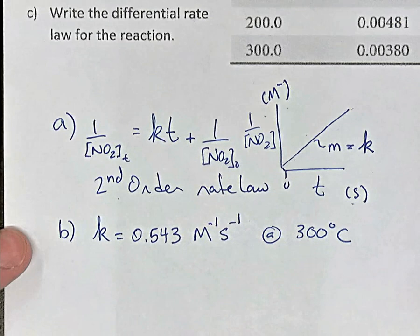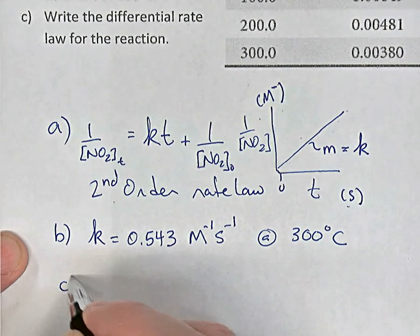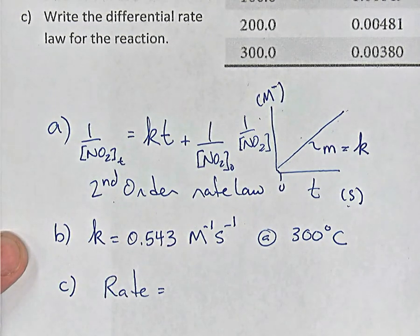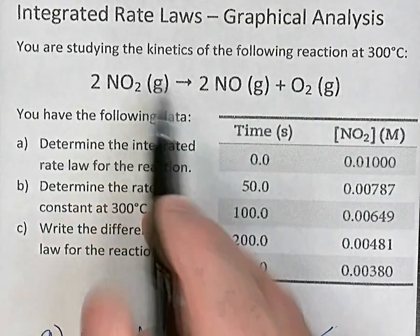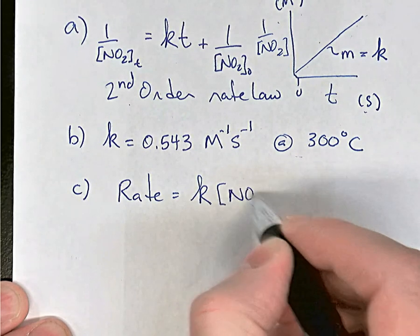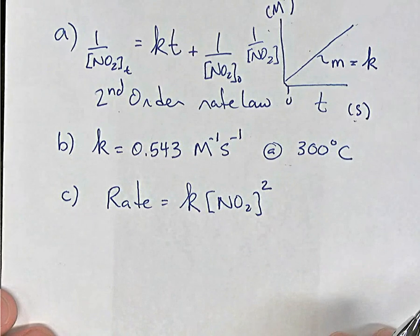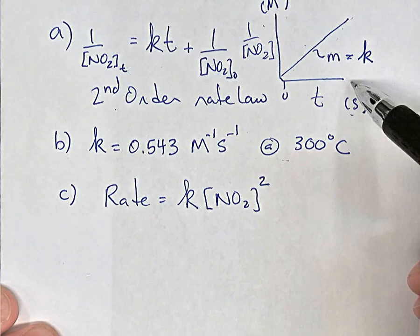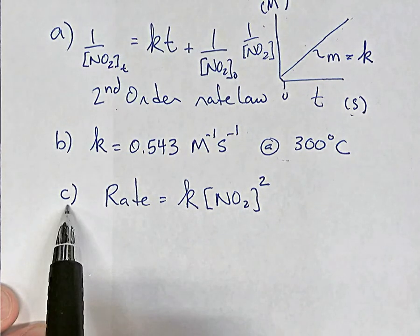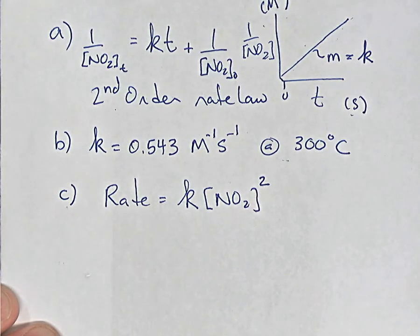Part C — write the differential rate law. Differential rate laws begin with rate equals. We know this is a second order reaction with one reactant, NO2, so the differential rate law is: rate = k[NO2]². That's the second order differential rate law. So we have the integrated rate law from the linear graph, the rate constant of 0.543 M⁻¹s⁻¹ from the slope via linear regression, and the differential rate law: rate = k[NO2]².